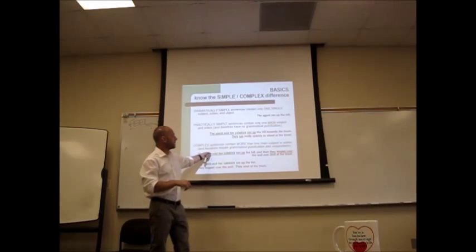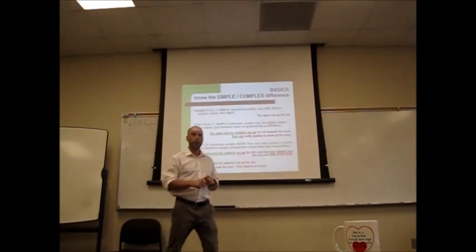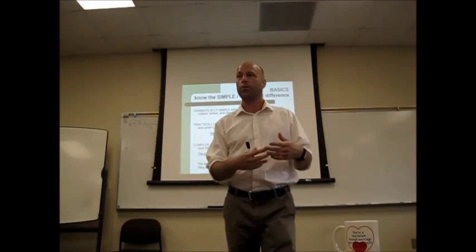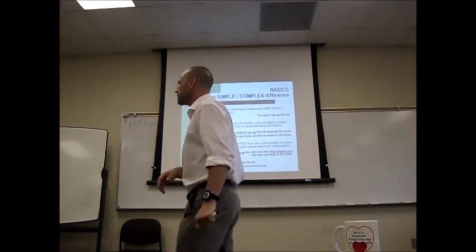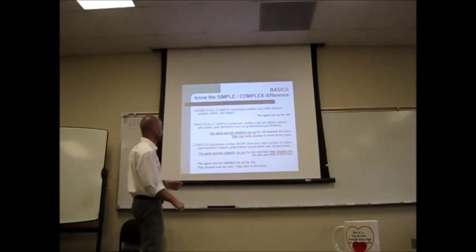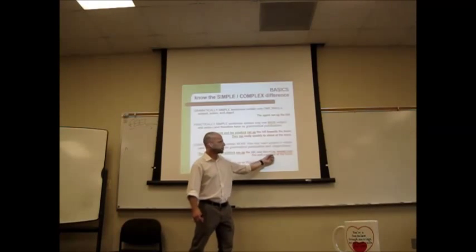Second kind of sentence: complex. Complex sentences have more than one action and/or more than one subject and/or more than one object, and there's no clearly most important single one of each. Like this sentence here: The agent and her sidekick ran up the hill, and then they leaped over the wall and shot at the truck.